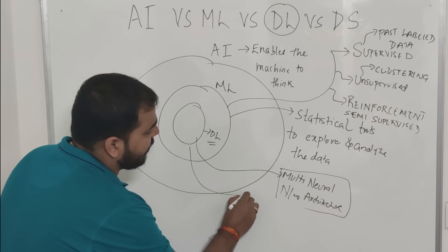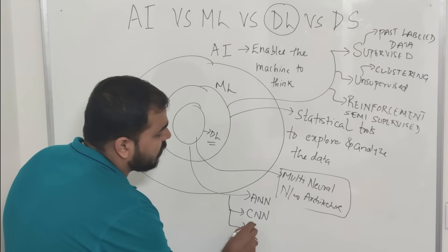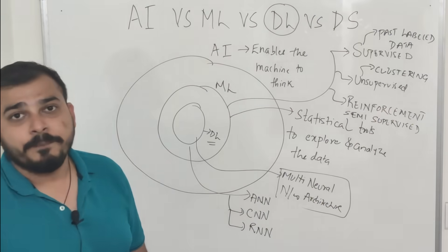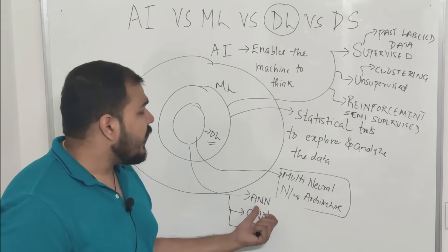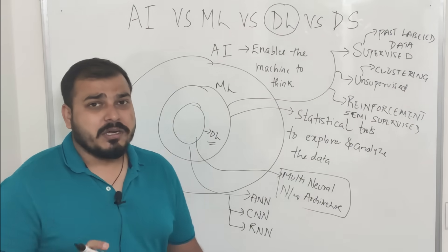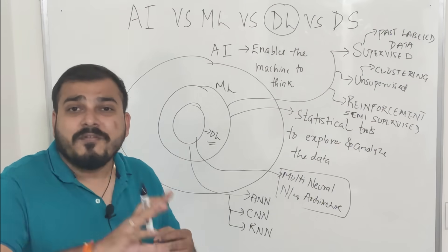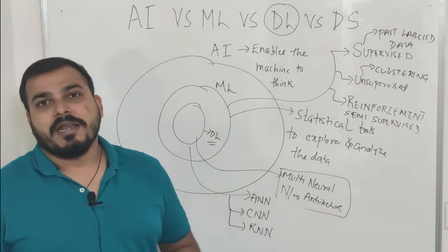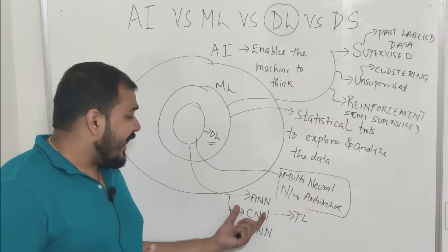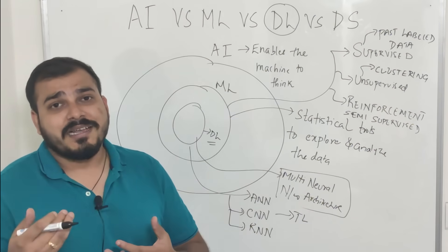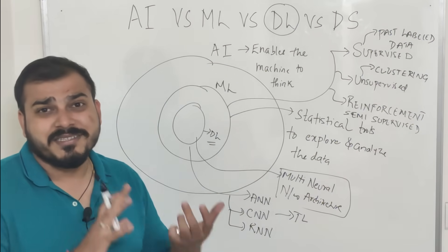In deep learning you have various techniques. One is ANN — artificial neural network. The second is CNN — convolutional neural network. The third is RNN — recurrent neural network. Most problems with data in the form of numbers are solved with ANN. If the input is in the form of images, we use CNN. If the input is time series data, we use RNN. Apart from these, there are advanced techniques like transfer learning and advanced CNN architectures such as Masked R-CNN.